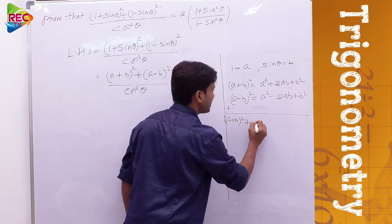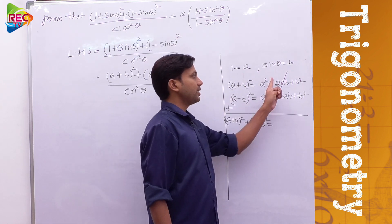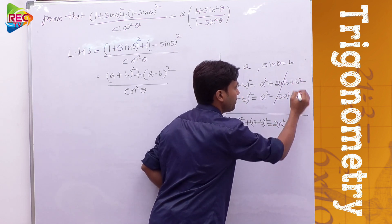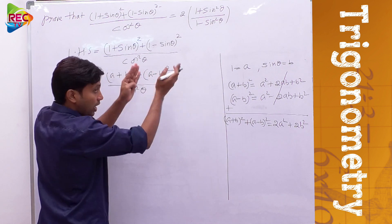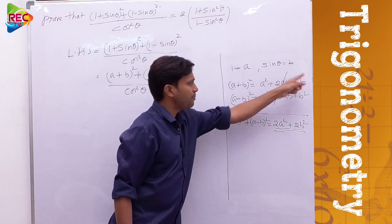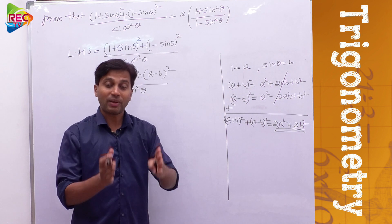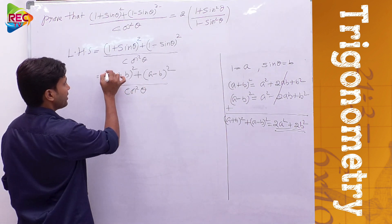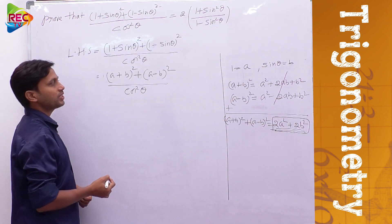When we add (a + b)² and (a - b)², the 2ab terms cancel out — the +2ab and -2ab eliminate each other. We are left with a² + a² = 2a² and b² + b² = 2b², so (a + b)² + (a - b)² = 2a² + 2b².